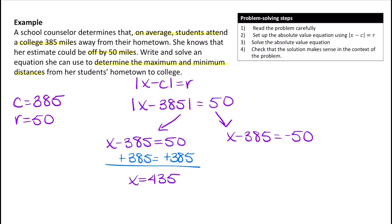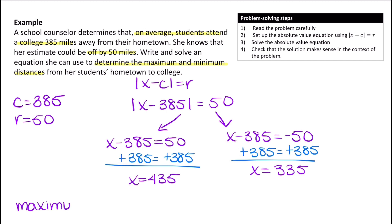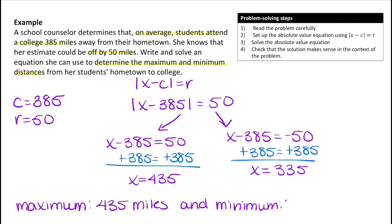Adding 385 to both sides of the second equation gives X equals 335. So we can determine the maximum value is 435 miles and the minimum value is 335 miles. Based on the context of the problem, 435 miles and 335 miles are pretty reasonable values, so we know that we solved everything correctly.